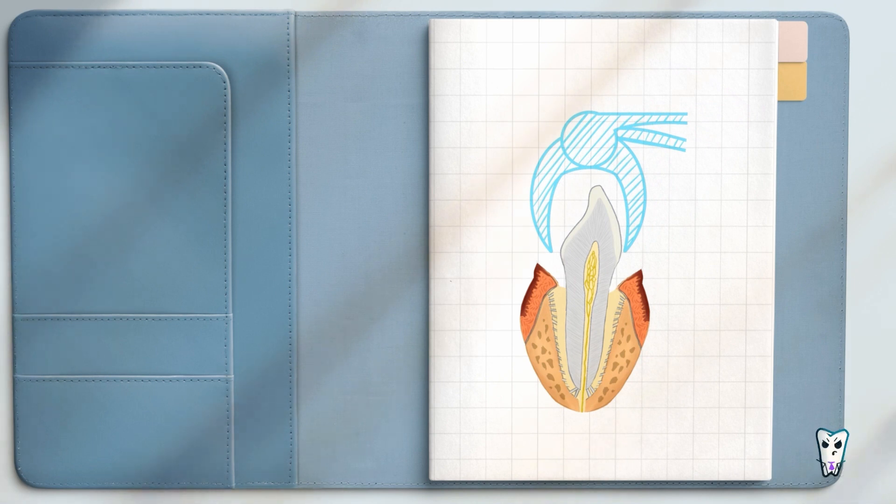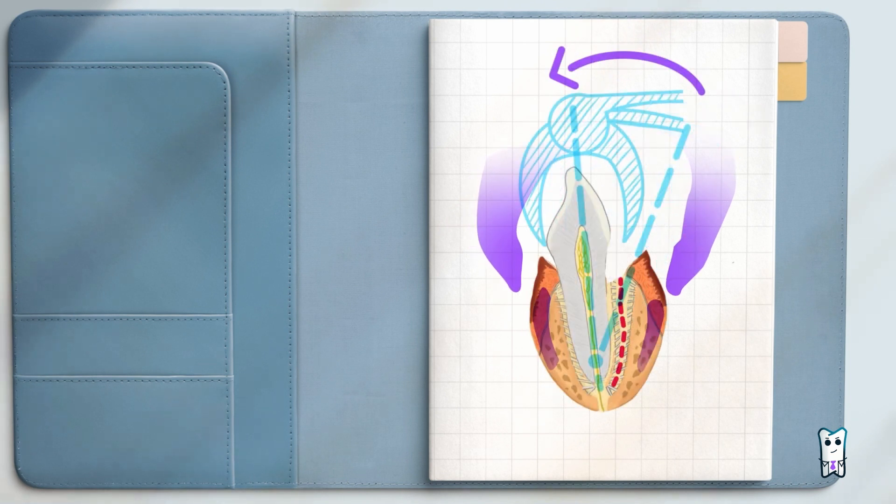The major portion of the force is directed toward the thinner alveolar wall because it deforms more easily. The fingers of your supporting hand are positioned vestibularly and orally to the tooth. Feel the deformation of the bone during luxation. Use this tactile feedback to guide you how much force is needed.